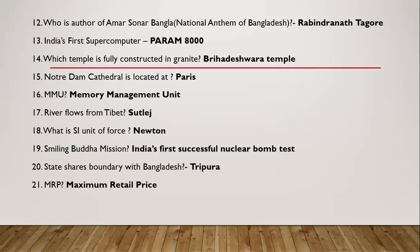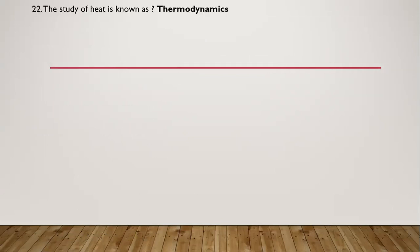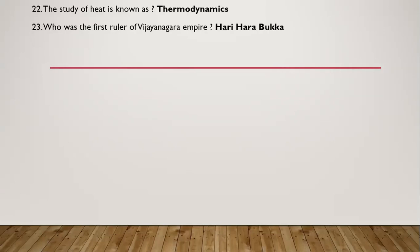Question 21: MRP stands for Maximum Retail Price. Question 22: The study of heat is known as Thermodynamics. Question 23: Who is the first ruler of the Vijayanagara Empire? It is Harihara Bukka.